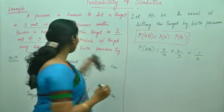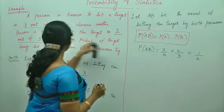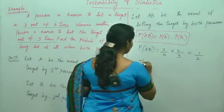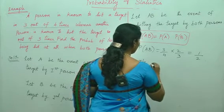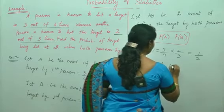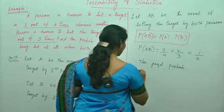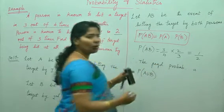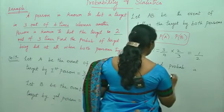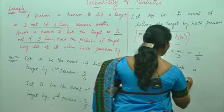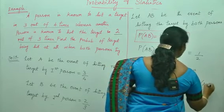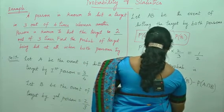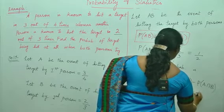Now we have got P of AB. What is the probability? Find the probability of target being hit at all when both persons try. In that case, the required probability is P of A union B. Now we need to use the law of addition of probabilities, that is P of A union B is equals to P of A plus P of B minus P of A intersection B. P of A intersection B is nothing but P of AB. Therefore it is 3 by 4 plus 2 by 3 minus 1 by 2.